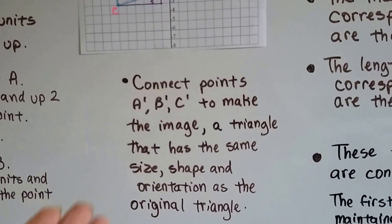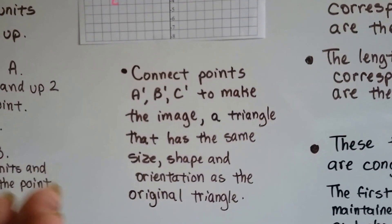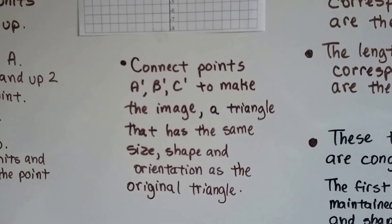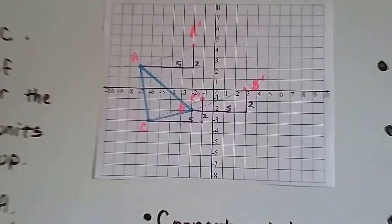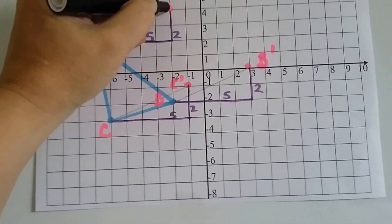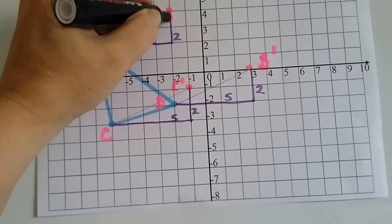All we have to do is connect the points A', B', C', to make an image, the triangle, that is the same shape and orientation, same size shape and orientation as the original triangle. So, we just connect these dots here, these points.